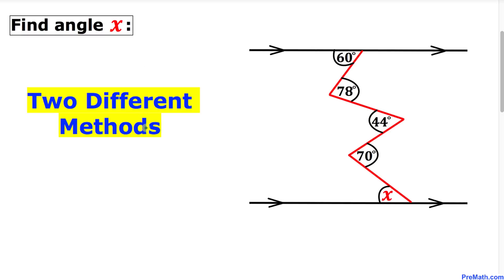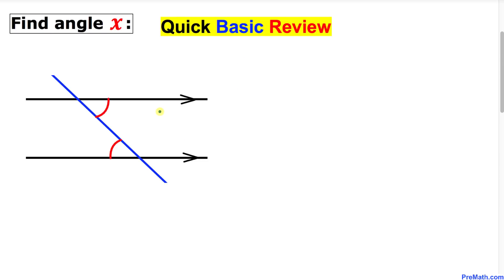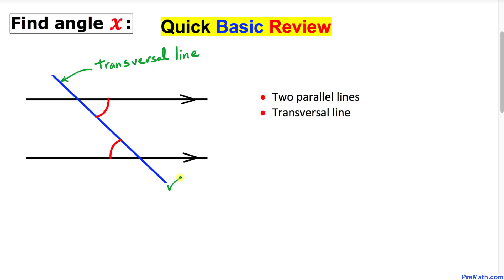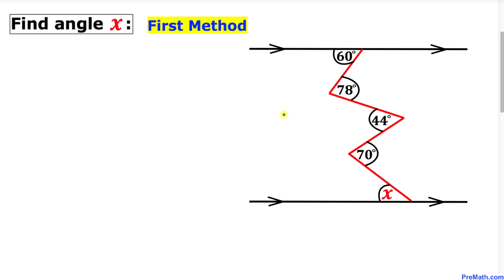I will share two different methods. Let me do a quick basic review. Here we have two parallel lines and a transversal line intersecting both of them. As a result, we get two angles called alternate interior angles, and these two angles are congruent to each other.